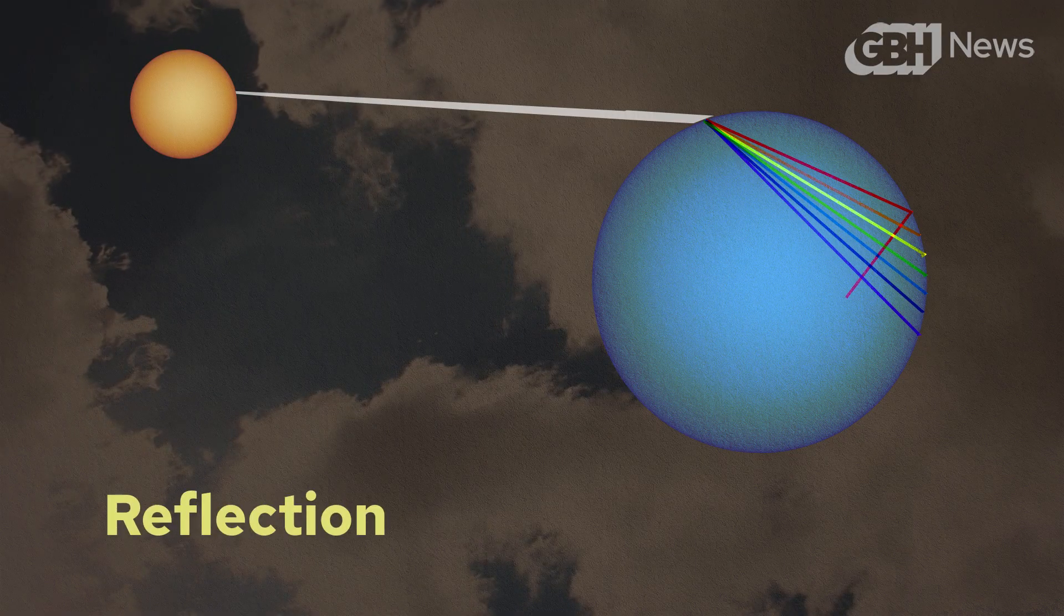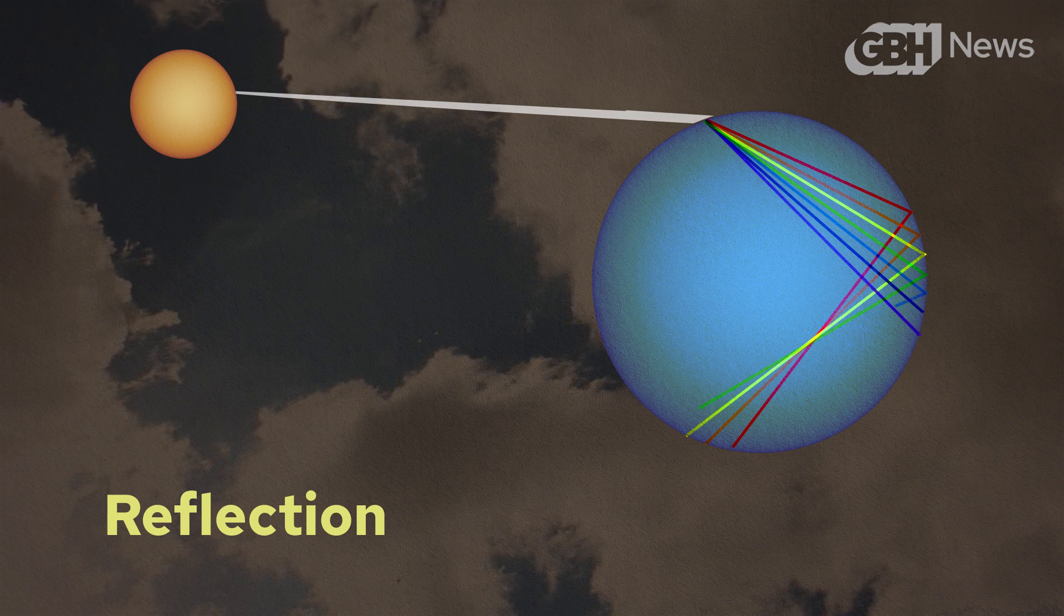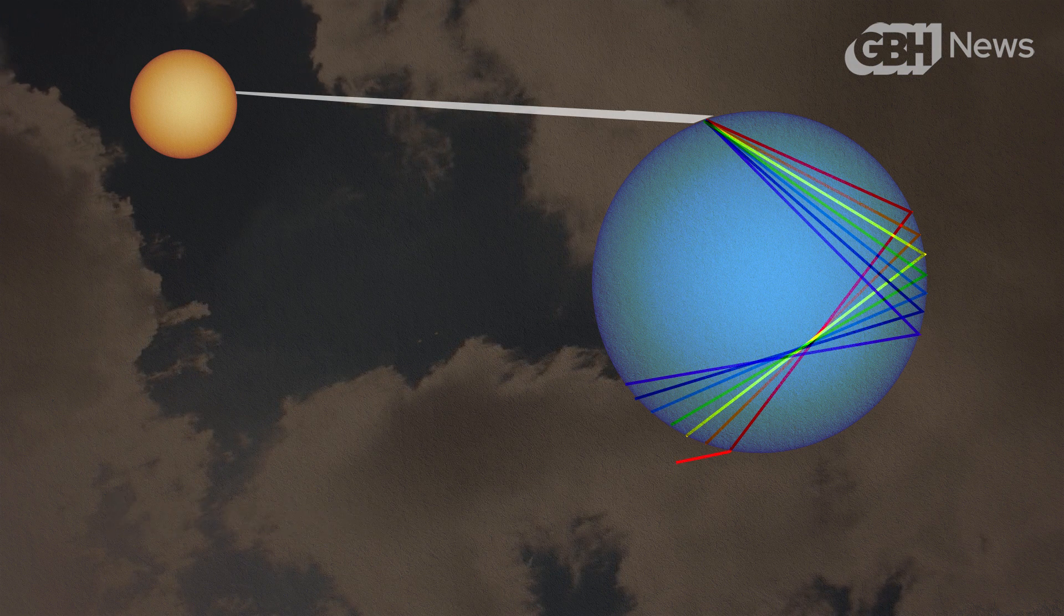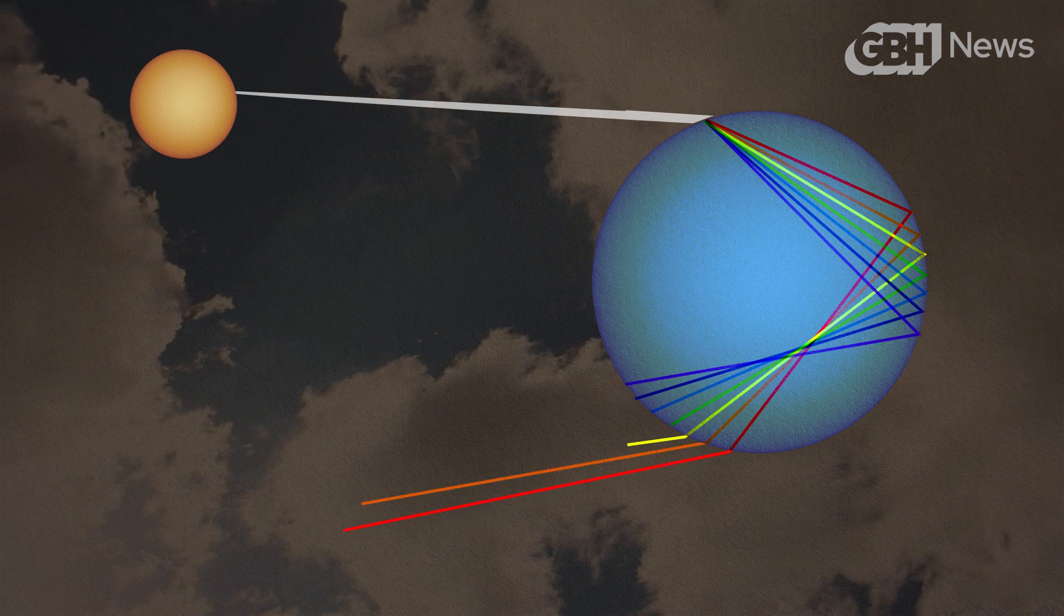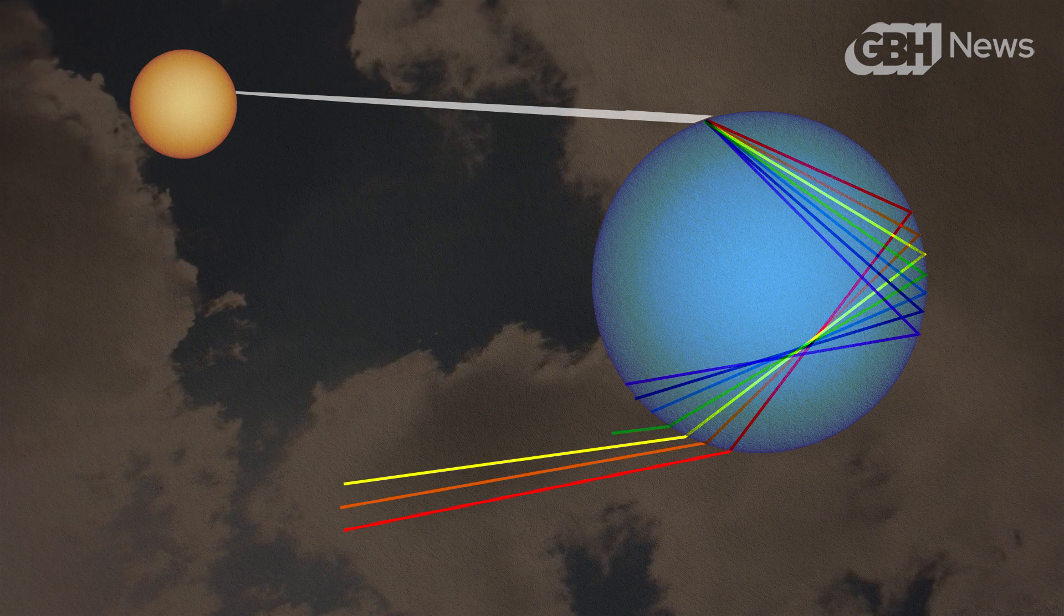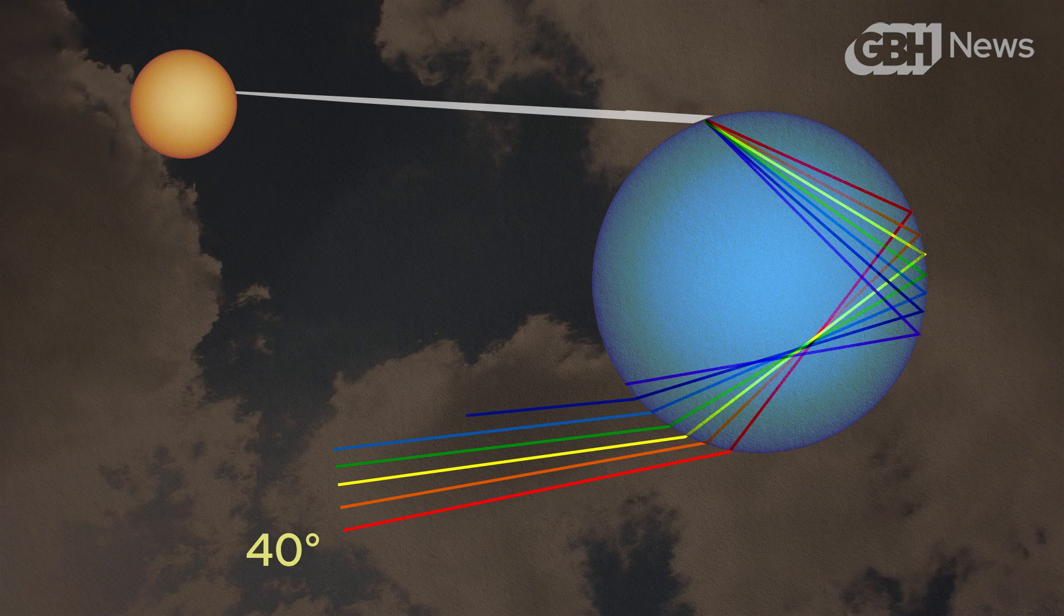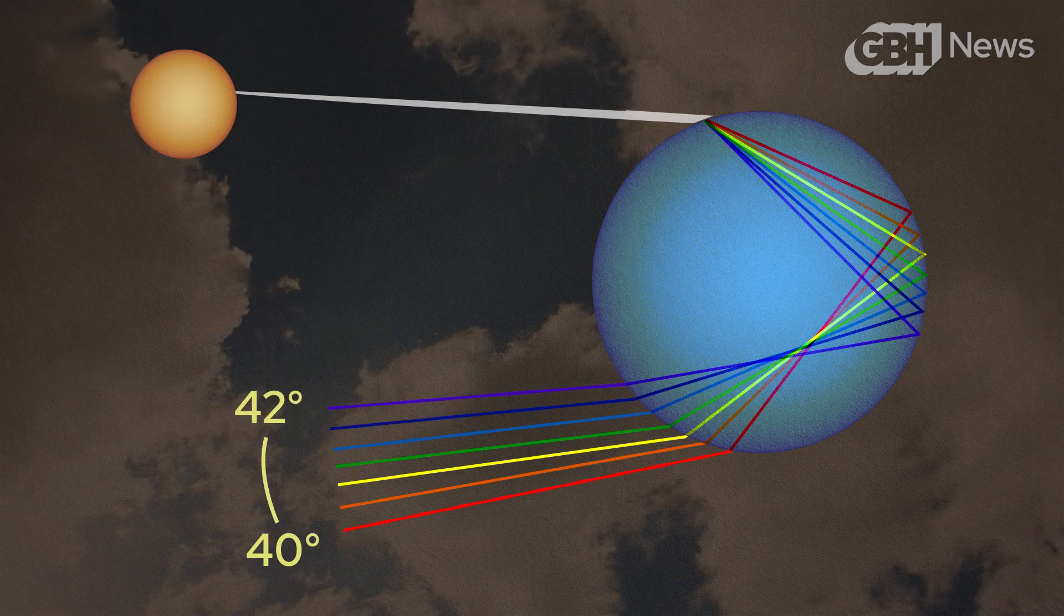After the light enters the raindrop and is split into its component colors, a small portion of it reflects off the back and heads in a new direction. With each color now on a slightly different path, it refracts one more time as it's leaving the droplet and heads back down toward the earth at a very precise angle. 40 degrees for the red, about 42 degrees for the violet, with the other colors in between.